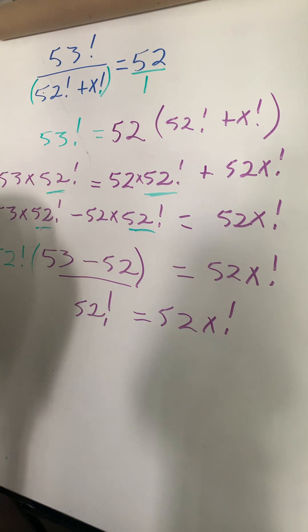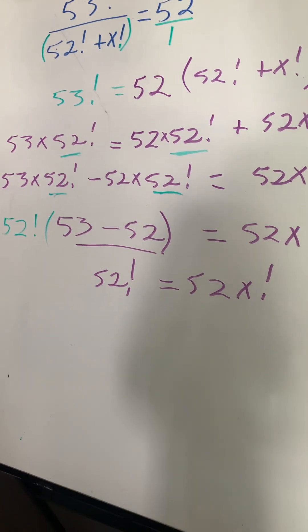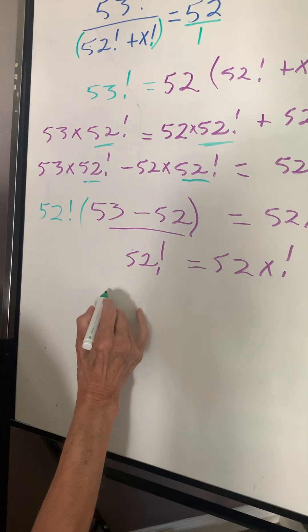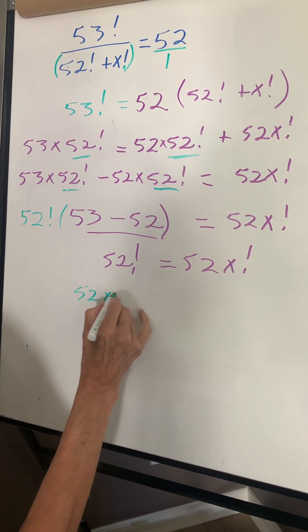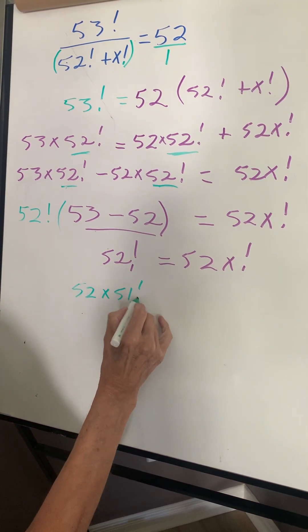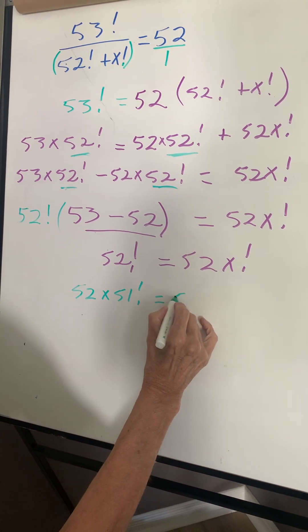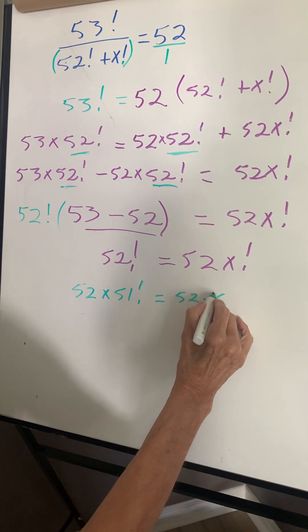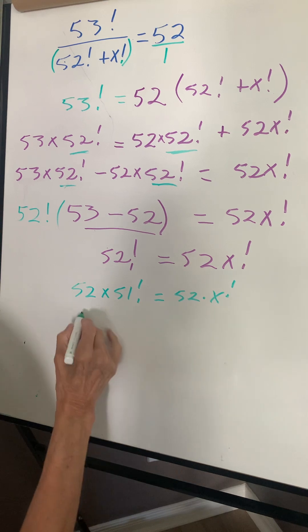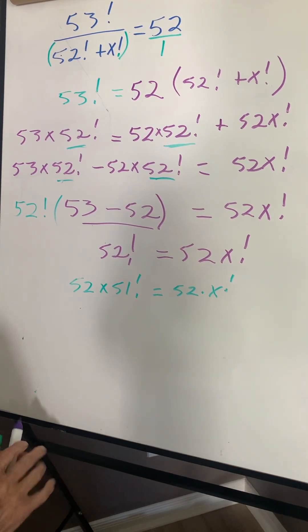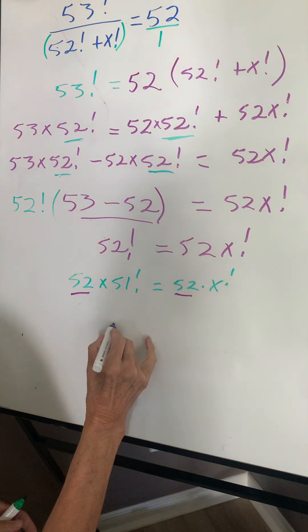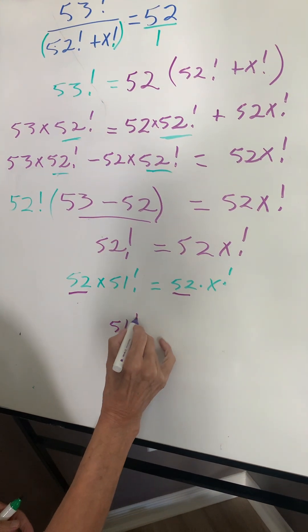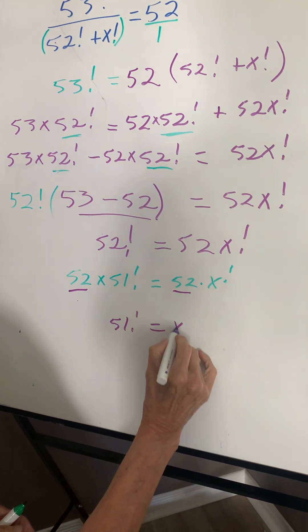Okay. Now this over here is 52 times 51 factorial equals 52 times x factorial. And this will cancel this. So I will be left with 51 factorial equals x factorial.